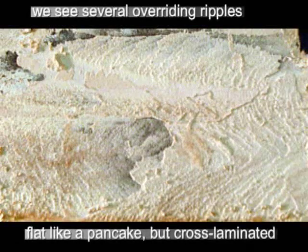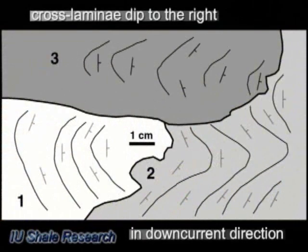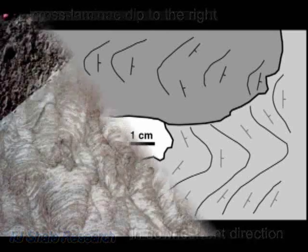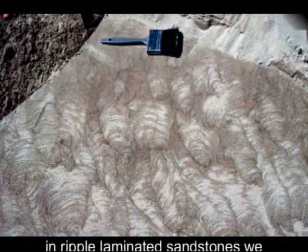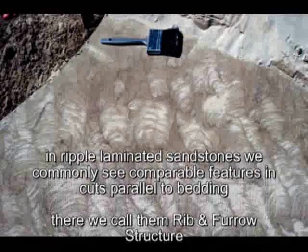They override each other and form a continuous clay bed. The same curved ridge pattern also occurs in current-deposited sandstone, and in that case it is called ridge and forest structure.